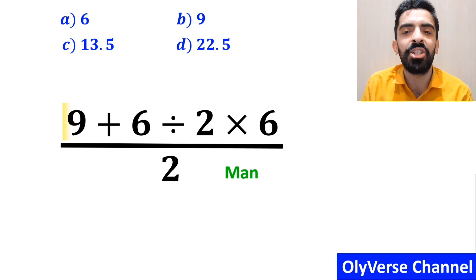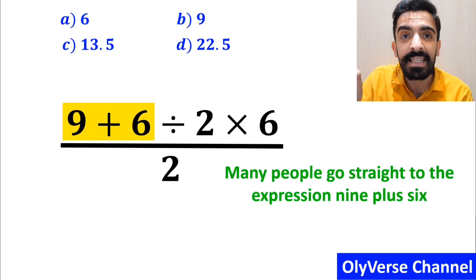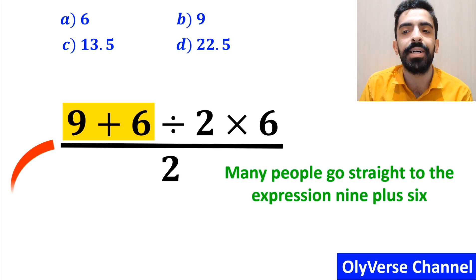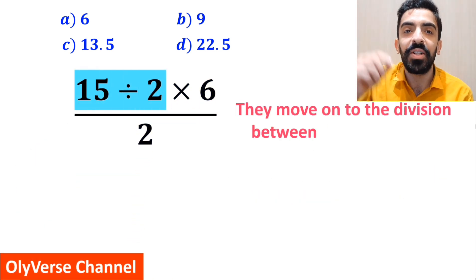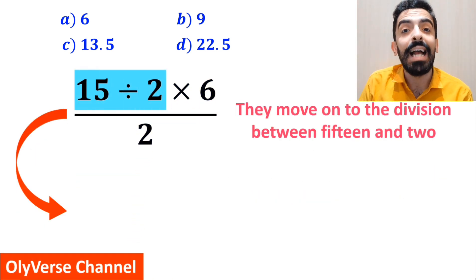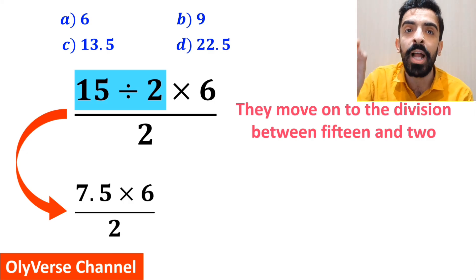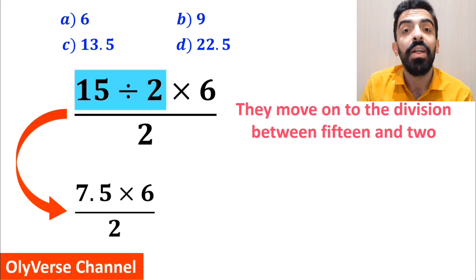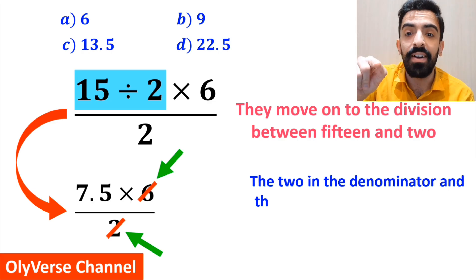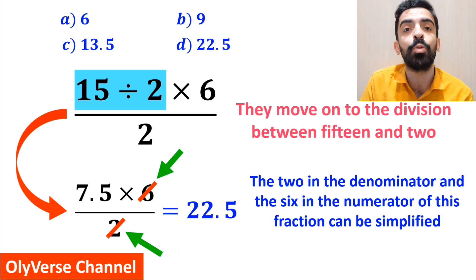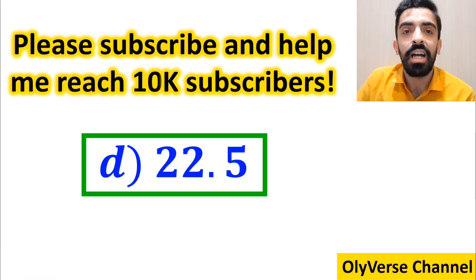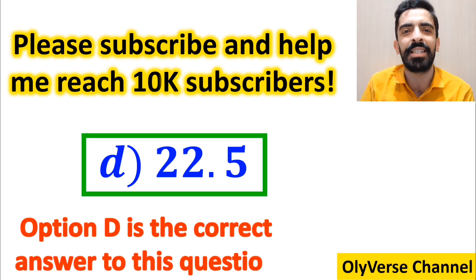Many people go straight to the expression 9 plus 6 in the numerator of this fraction and replace the whole expression with 15 divided by 2 times 6 over 2. Then they move on to the division between 15 and 2, simplifying to 7.5 multiplied by 6 over 2. They then simplify the 2 in the denominator and the 6 in the numerator, concluding the final answer is 22.5, quickly saying that option D is the correct answer.